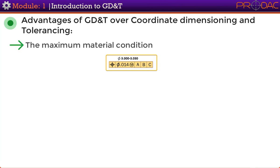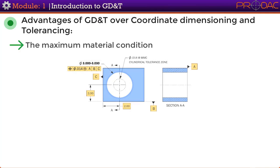The second advantage involves the maximum material condition symbol M. In a feature control frame, it is a modifier that specifies that as the hole size increases, a bonus tolerance is added to the tolerance in the feature control frame. For example, the minimum size of the hole is 3.000 at MMC and the maximum is 3.030 at LMC. As the hole size departs from MMC to LMC, additional location tolerance called bonus tolerance is allowed in the exact amount of such departure. If the actual size of the produced hole is 3.020, the total tolerance works out to 0.034.